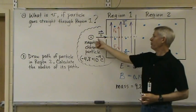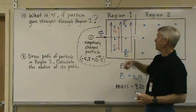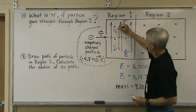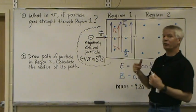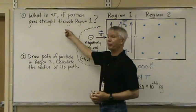So, in order for this to pass straight on through, these must cancel each other out. The net force on the particle must be zero. So, let's figure out what V is.